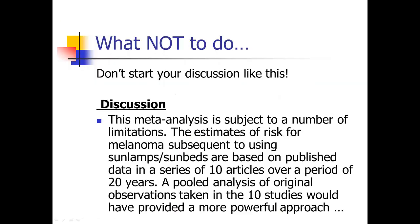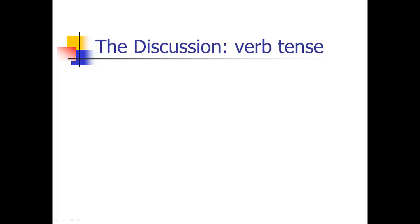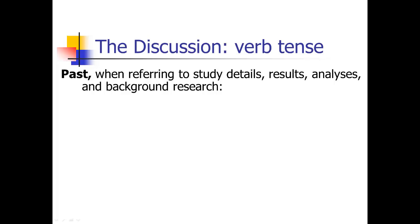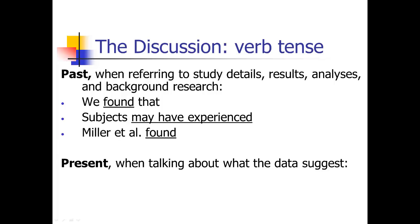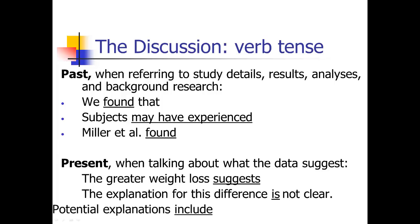A few things of what not to do in your discussion section. One example started with: 'This meta-analysis is subject to a number of limitations.' Do not start your discussion section with the limitations. Start with 'we found that' — your main finding. Bury the limitations deeper, several paragraphs down. On verb tense: use the active voice. Use past tense when referring to things already completed — study details, results, analyses, and other people's work ('we found that,' 'Miller et al. found'). Use the present tense when talking about what the data suggest, because the data are still suggesting that ('the greater weight loss suggests,' 'the explanation for this difference is not clear').